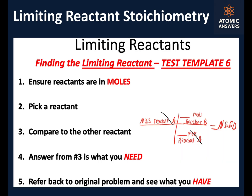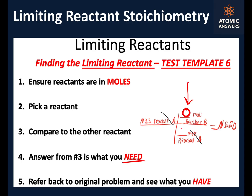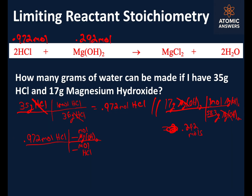So that was just step one. Step two is to pick a reactant, and step three is to compare it to the other reactant using a mole-of-chosen-reactant to mole-of-the-other-reactant conversion — that gives us the amount of the other reactant we need. I'll choose HCl first. We have 0.972 moles of HCl. When you have a mole-over-mole step, the numbers come from the coefficients in your balanced chemical equation.